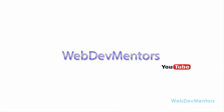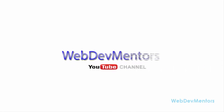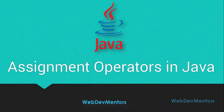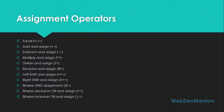Hello and welcome to WebDementors YouTube channel. You are watching the Programming in Java series for beginners. In this video we're going to see about assignment operators in Java. Assignment operators are mainly used to assign some values to a variable that you have declared, possibly after doing a calculation or an operation. We have a list of assignment operators and we are going to see about using them in a program.